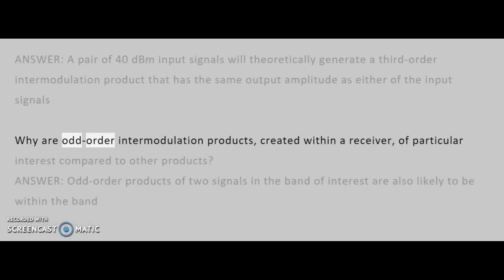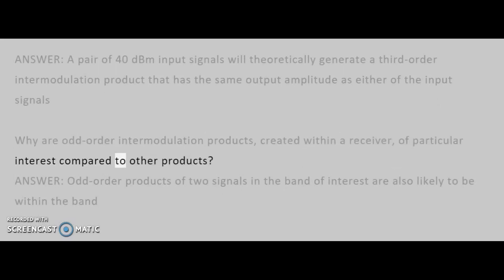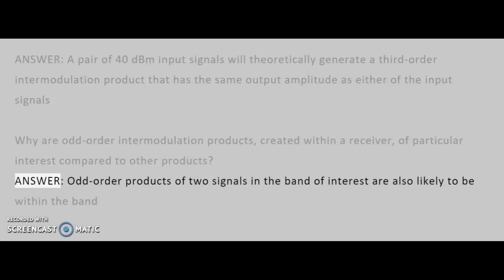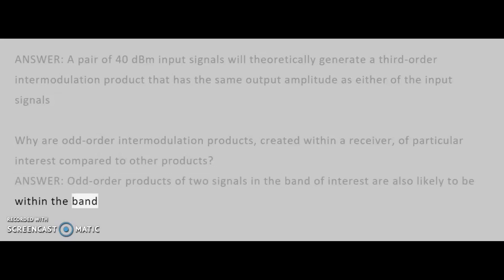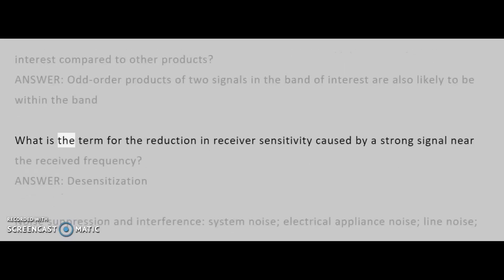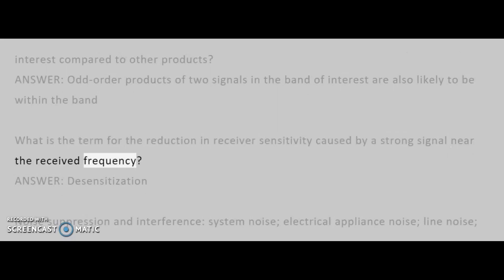Why are odd-order intermodulation products, created within a receiver, of particular interest compared to other products? Answer: Odd-order products of two signals in the band of interest are also likely to be within the band. What is the term for the reduction in receiver sensitivity caused by a strong signal near the received frequency? Answer: Desensitization.